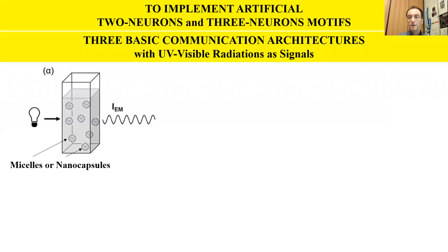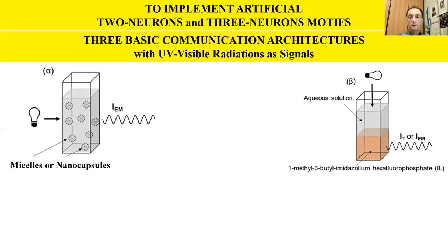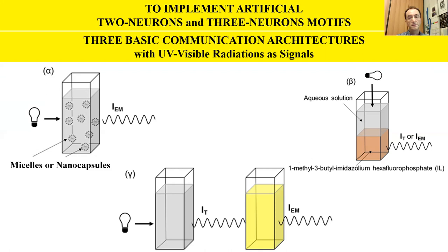To implement artificial two-neuron and three-neuron motifs, we have devised three communication architectures: alpha, beta, and gamma. In alpha, the transmitter and the receiver are in the same cuvette and the same phase, possibly with one component segregated by micelles. In beta, the transmitter and the receiver are in the same cuvette but in two immiscible phases — for instance, water and ionic liquid. In the gamma architecture, the transmitter and the receiver are in two different cuvettes. Networks with three neurons have been obtained by hybridizing or upgrading the alpha, beta, and gamma architectures.